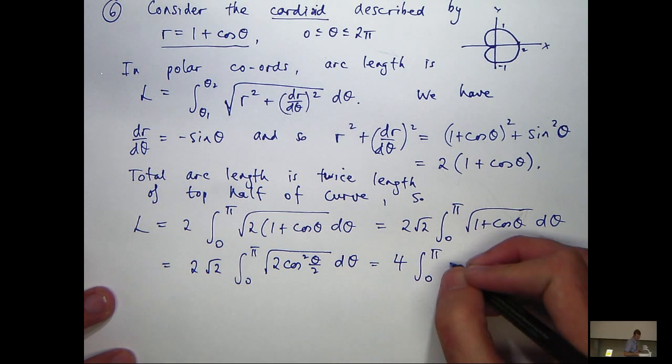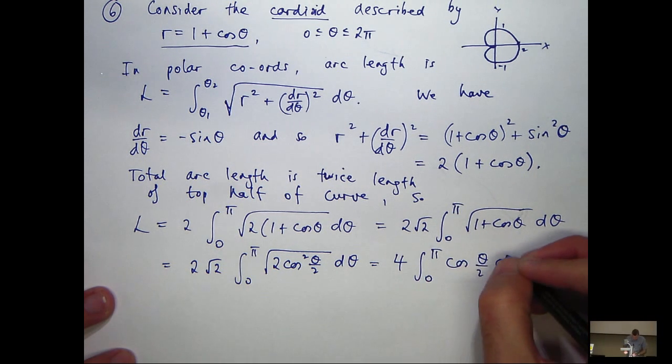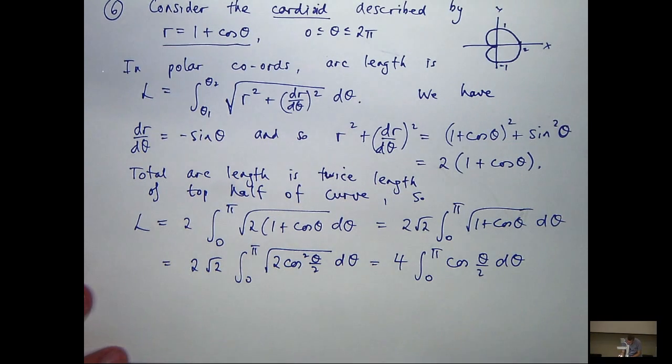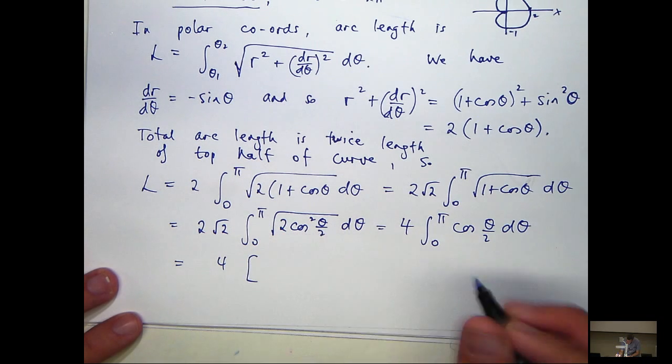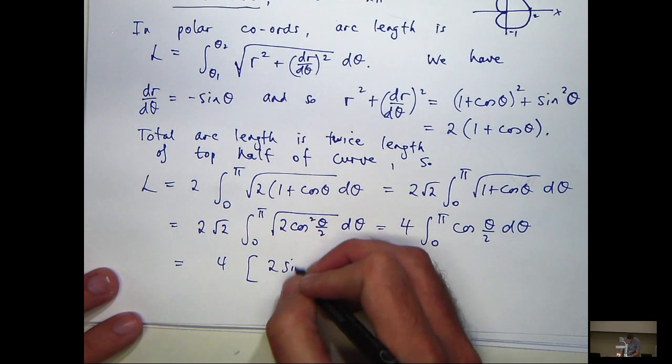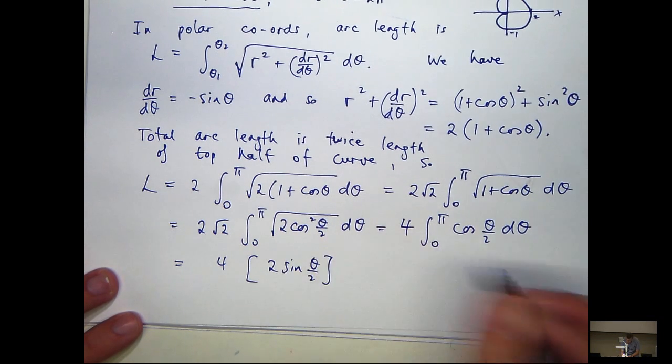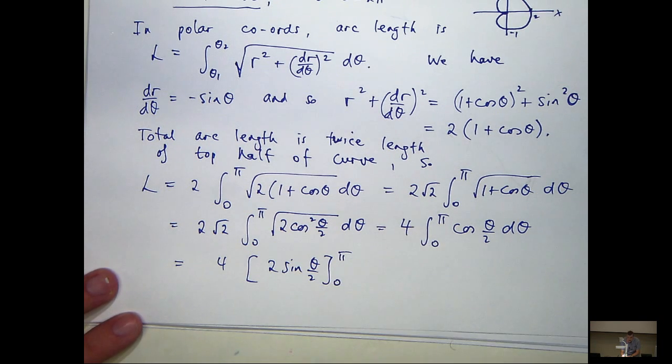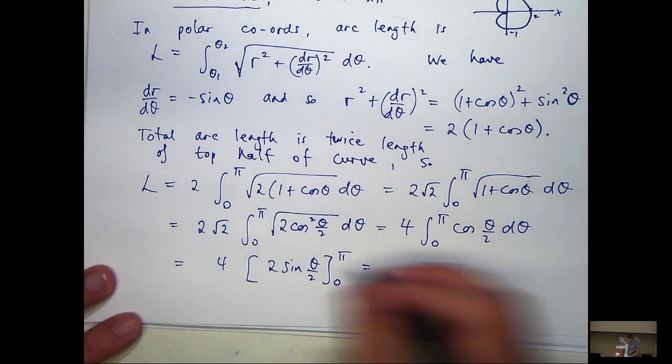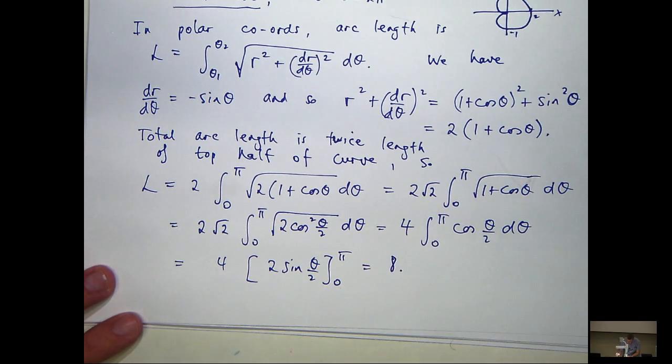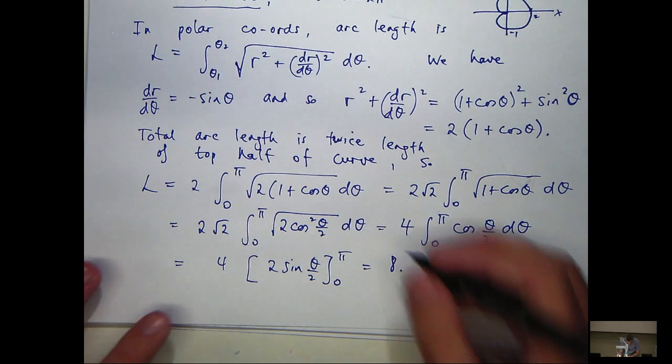And now I'm just integrating cosine θ/2. So I'm going to have something like 2 sine θ/2, and then I just need to plug these two in, and I'll get eight.